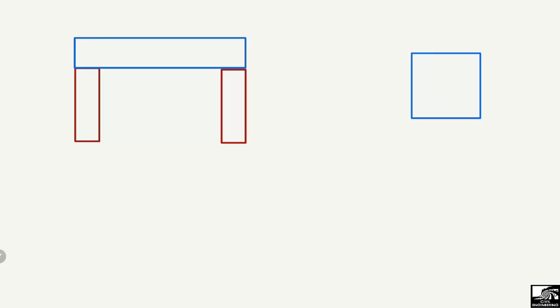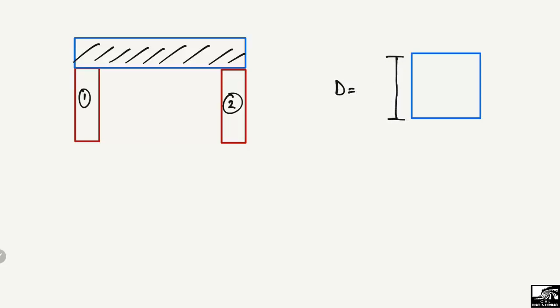Here we can see a reinforced concrete beam supported by two columns — this is the first column and this is the second column. This is a simply supported beam, supported by two supports. We are interested in finding the minimum depth D and the minimum width of this beam.